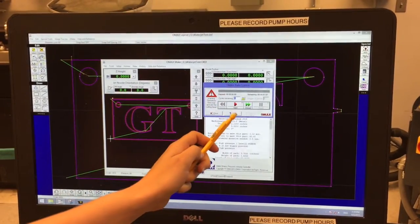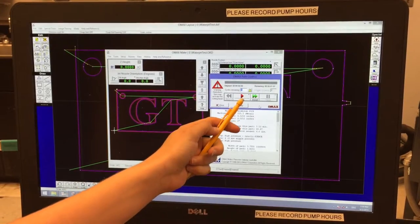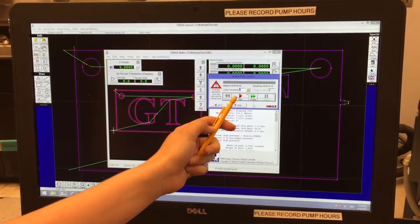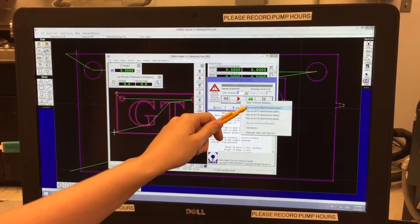This is that same dialog box from earlier. And be careful because if you click this red button, it will start cutting. To do a dry run, right click on the red button and click Dry Run at Full Rapid Traverse Speed.